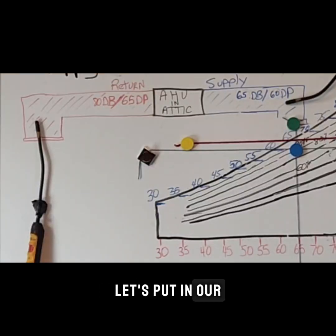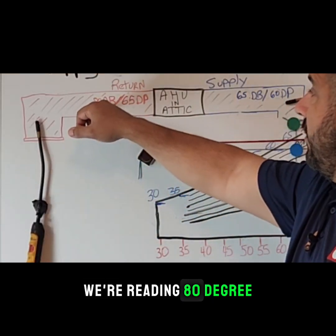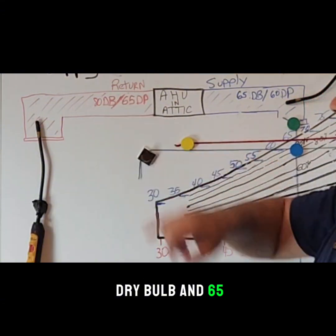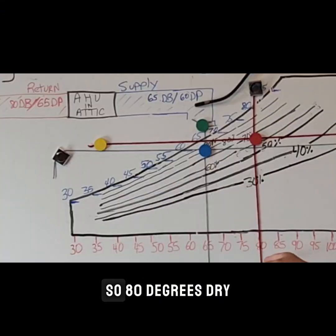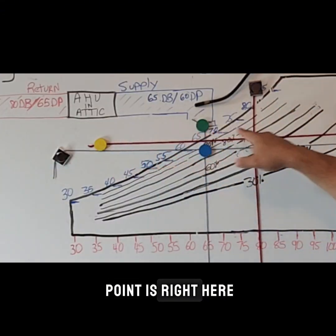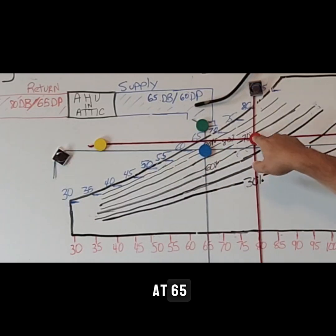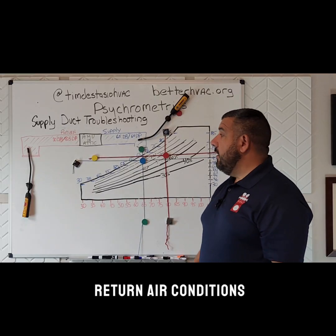Let's put in our return probe. Here we're reading 80 degree dry bulb and 65 degree dew point. So 80 degrees dry bulb and our dew point is right here at 65 — so here are our return air conditions.